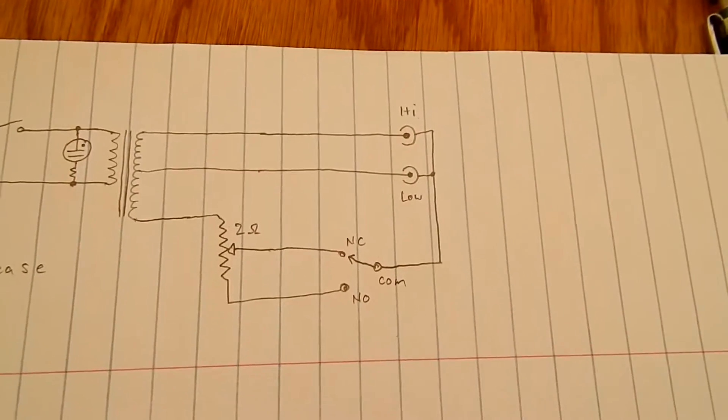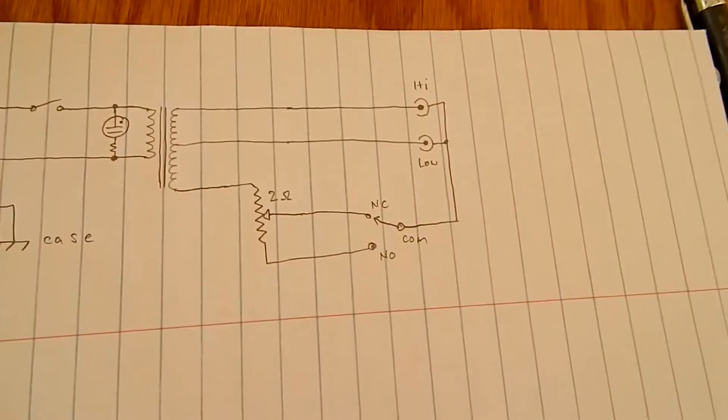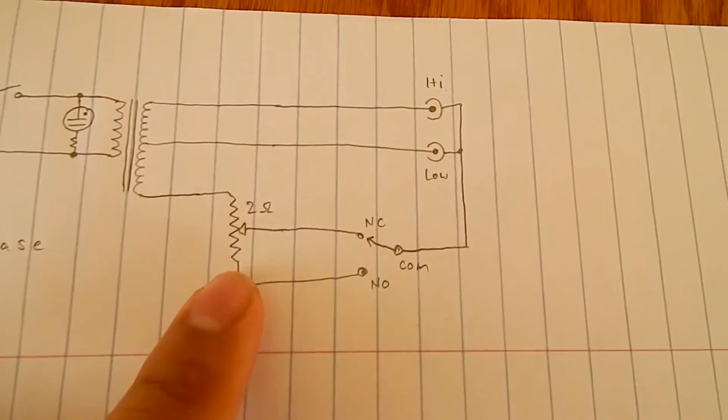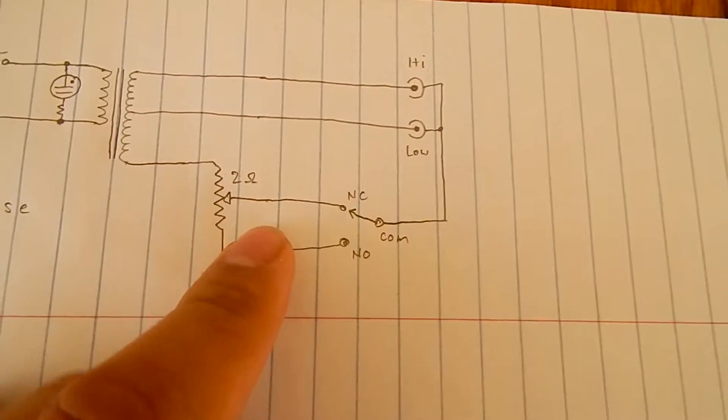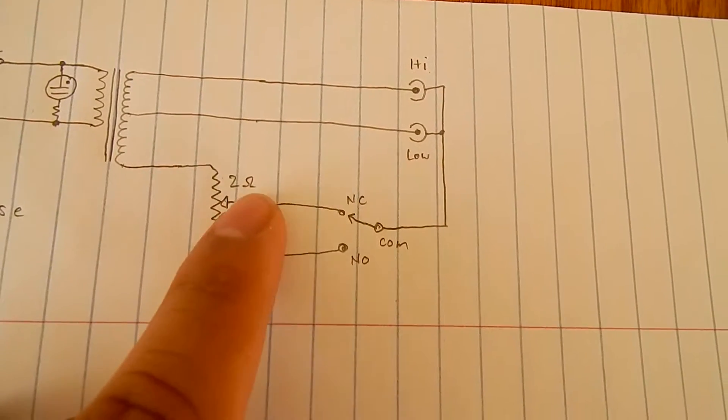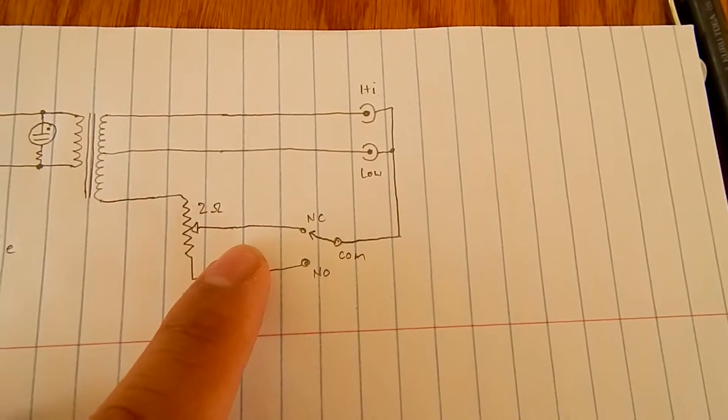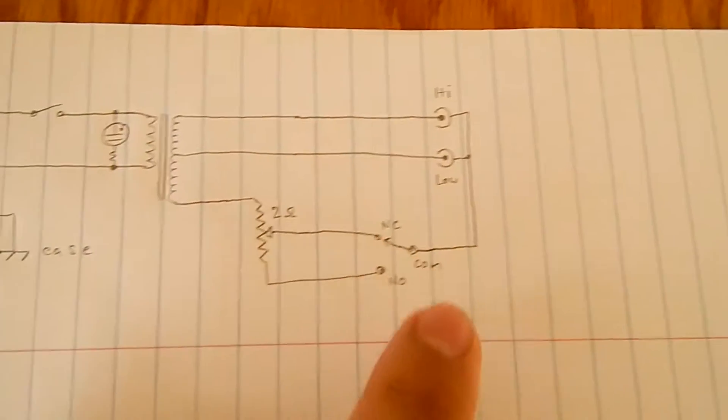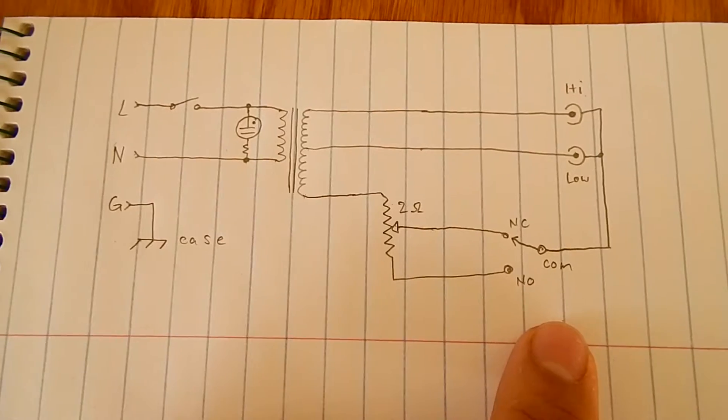So when you put the tweezers back on the thing, it doesn't necessarily turn it off. It just puts it in a lower setting because it runs through the 2 ohm resistor essentially. Then when you take it off, it's on normally connected. And it would just run at whatever resistance that you have it set to. But then that doesn't really explain why it was still on when I didn't have the tweezers closed. I'm gonna have to look at the tweezers and how those work.